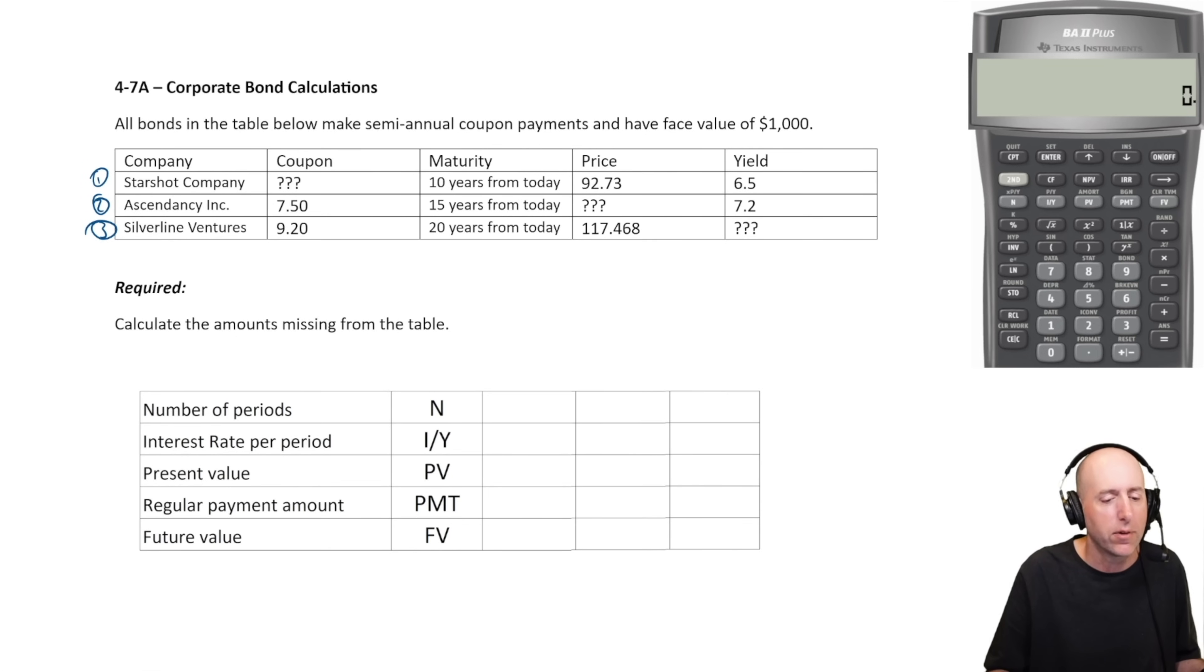We're given a bond table and we're just missing information. Starshot is missing its coupon - coupon by the way is what drives the PMT, that's the regular payment, it's the interest payment. As I'm thinking about my financial calculator, I translate coupon into PMT. Maturity is all about the number of periods, price is the present value - how much would you pay for this bond today - and yield is our discount rate or our I/Y in a financial calculator.